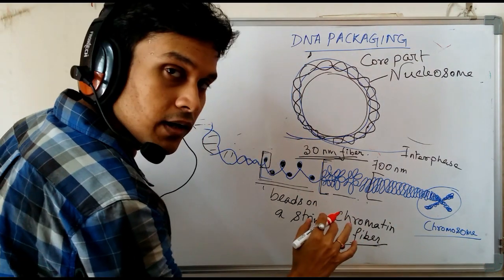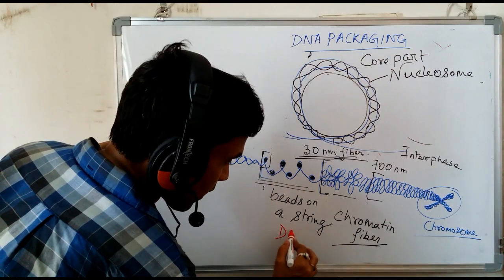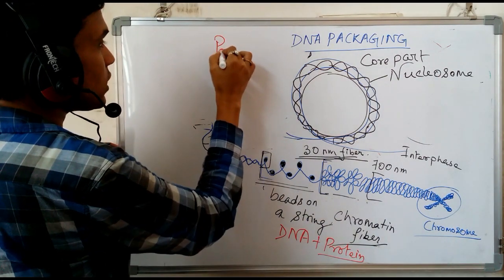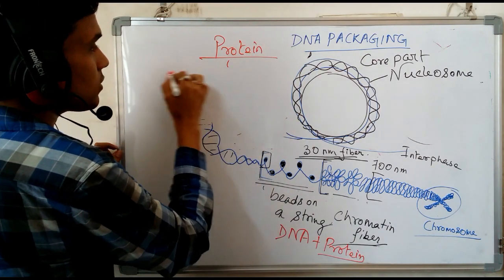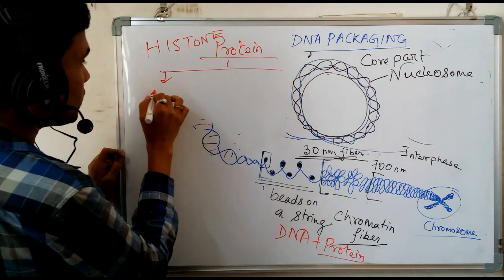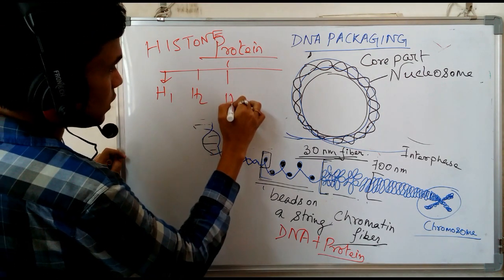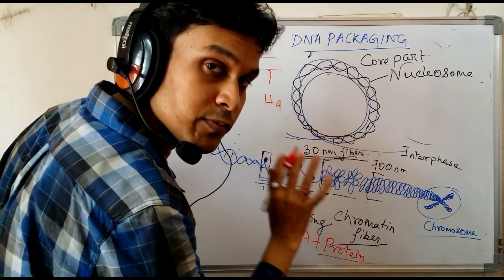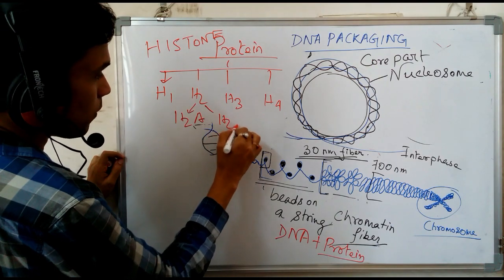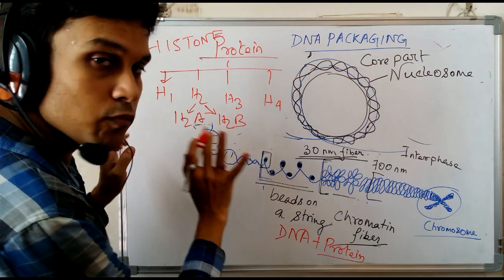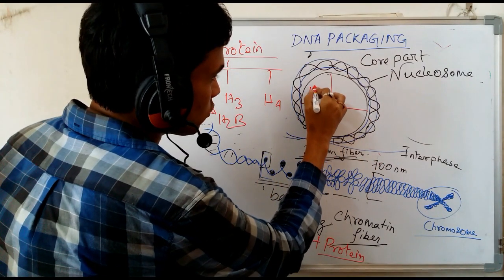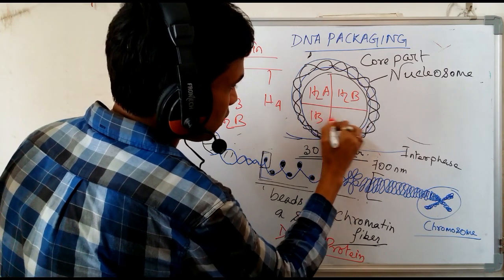This chromatin fiber consists of DNA as well as protein. The special type of protein present is called histone protein — histone 1, histone 2, histone 3, and histone 4. The bead structure is made up of four types of histone protein: histone 2a, histone 2b, histone 3, and histone 4. This is actually an octamer structure — octa means 8.